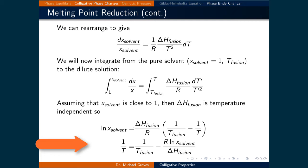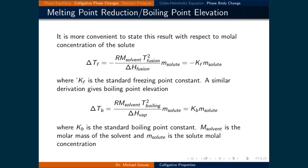This expression tells us that the lowering of the melting point does not depend on what was added to the solvent. The only thing that the solute changes is the mole fraction of the solvent, which is what ultimately lowers the melting point. It is more convenient to state this result with respect to the molal concentration of the solute. This can be written as ΔT_fus = −(R × M_solvent × T_fus² / ΔH_fus) × m_solute. All of the constants — R, molar mass of the solvent, temperature of fusion squared, and the enthalpy of fusion — can be bundled together in a constant k_f, the freezing point constant, which is known for many solvents.